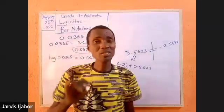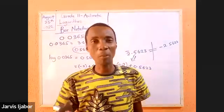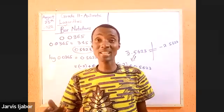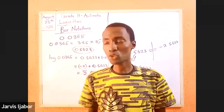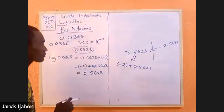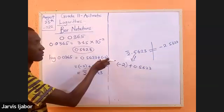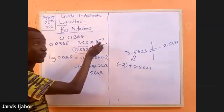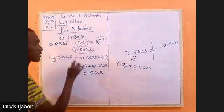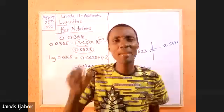I started by saying that the concept of bar notation refer to looking for the log of a number that is less than 1, which means that the number is considered as a pure decimal. We write the number first in standard form. This answer gives us the characteristics, and our log reading table will give us the mantissa. And in combining them together, we introduce what is called a bar notation.